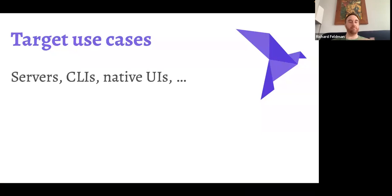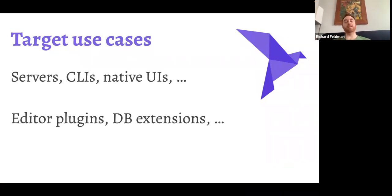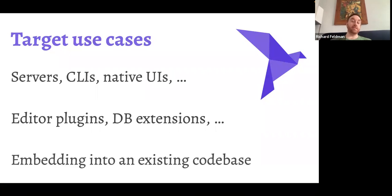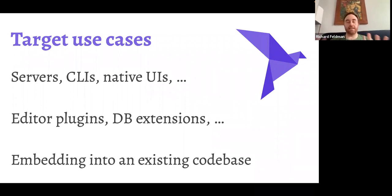Some specific use cases include web servers, command line apps, and native UIs. There's also a long tail of other domains: writing editor plugins like for Vim, database extensions, and basically the types of things you might use Lua for. Also, embedding into an existing codebase — at my previous job we used Elm on the front end and were increasingly using Haskell on the back end, but we had a big legacy Ruby on Rails codebase. Haskell is not designed to be easily embeddable in other languages. One of the things I wanted Roc to be good at is being embedded inside another language so you can incrementally transition to it or use it for plugins or scripting inside a game engine.